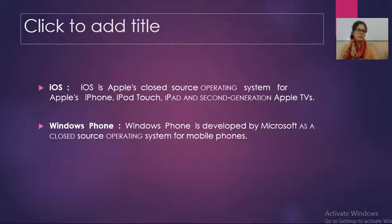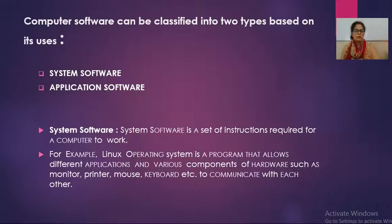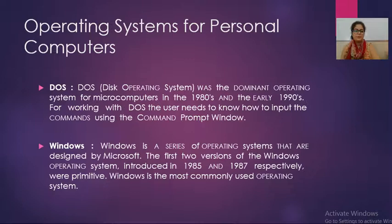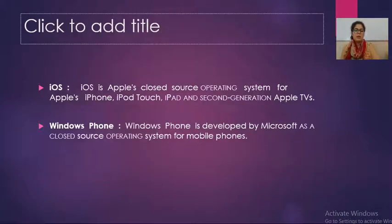With this we have completed today's topic. In today's lecture we studied types of software: system software and application software. The software required to operate the system is called system software, and the software required to solve some specific problem of a user is known as application software. After that we studied operating system, different types of operating system for PC, and operating systems for mobile phones. That's all for today — tomorrow we will start with the next topic of this unit.